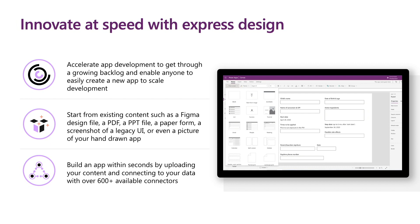As a maker, you can simply upload a Figma design file, a PDF or PBD file, a paper form, or a screenshot of legacy UI, and PowerApps will convert it into a working app within seconds — with a UI built from your input or from a connected data schema. If you are a professional developer and already have a custom connector working, but it's difficult to connect your app to your custom API, with Express Design, one command line is all you need to create your Canvas app from your API.